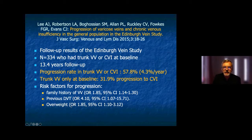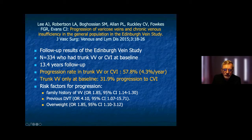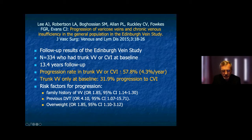Looking at progression of varicose veins in the follow-up of the Edinburgh Vein Study, the progression rate in trunk varicose veins or chronic venous insufficiency was 57.8% — almost two thirds of the population developed progression within 13.4 years. Looking at only trunk varicose veins at baseline, one third of this population had progression towards chronic venous insufficiency. Risk factors were family history, previous DVT, and again, overweight.